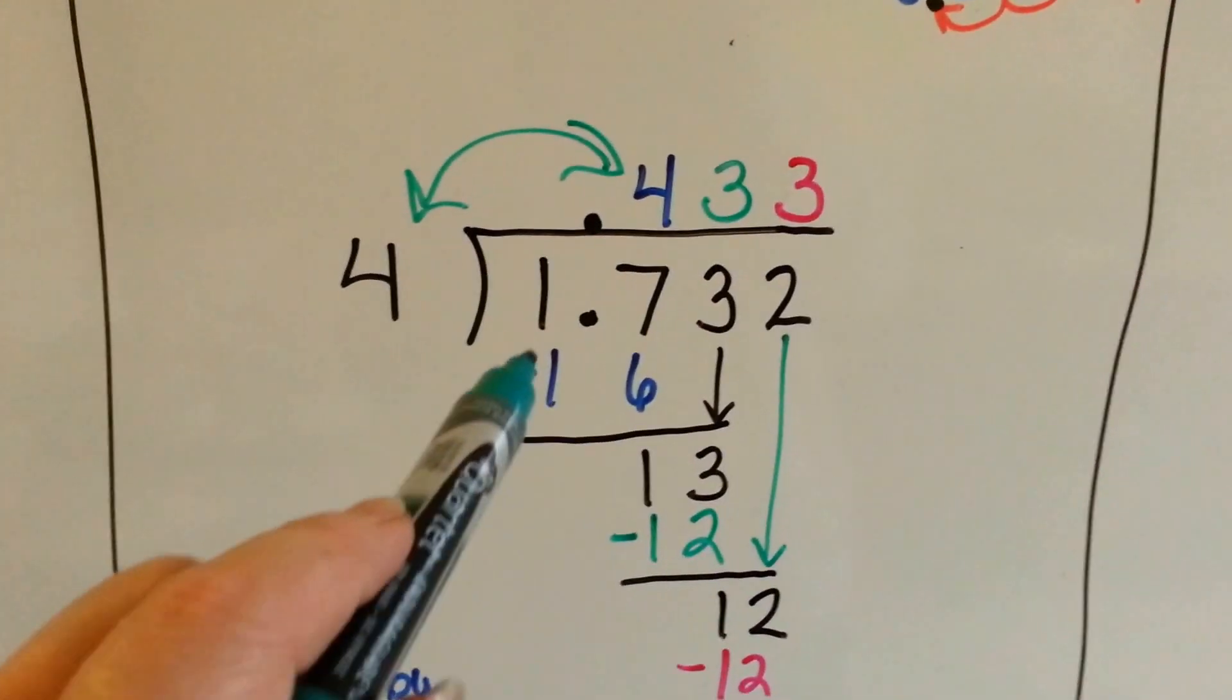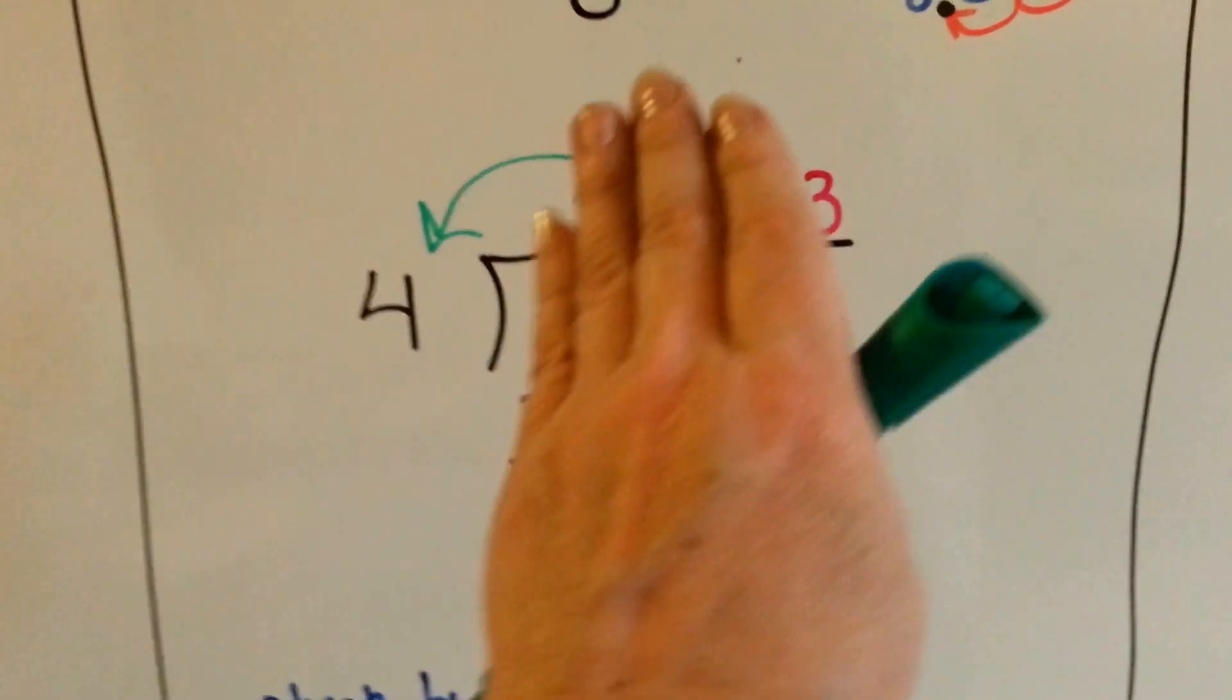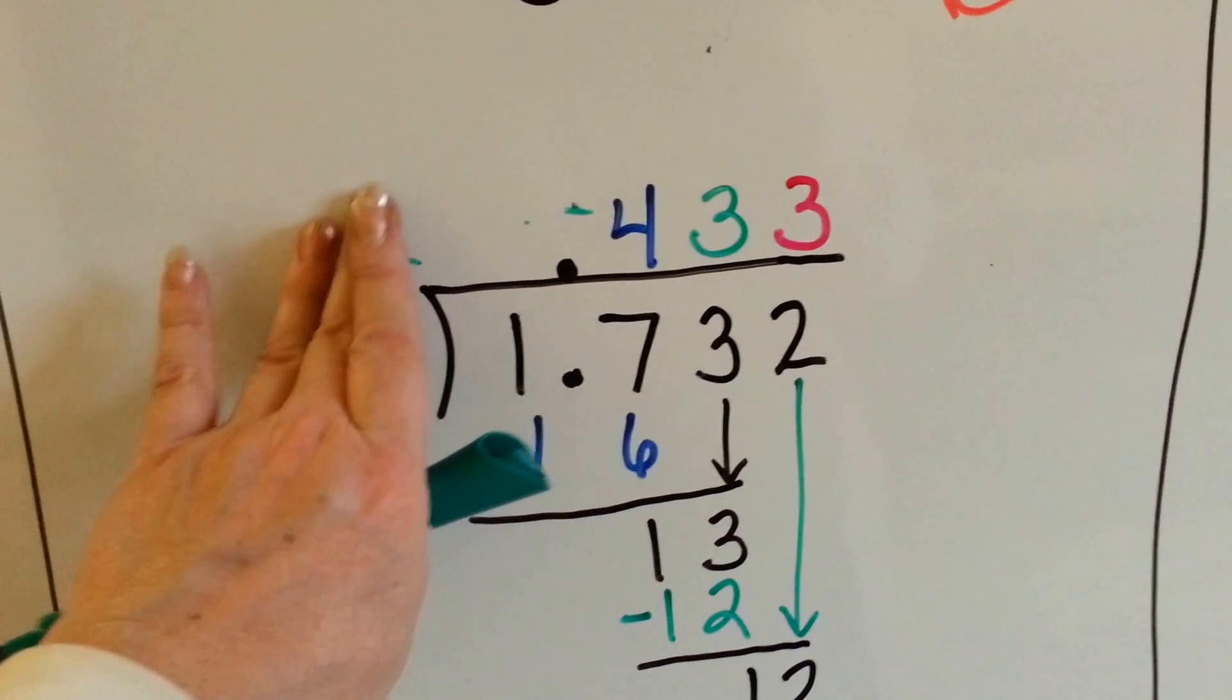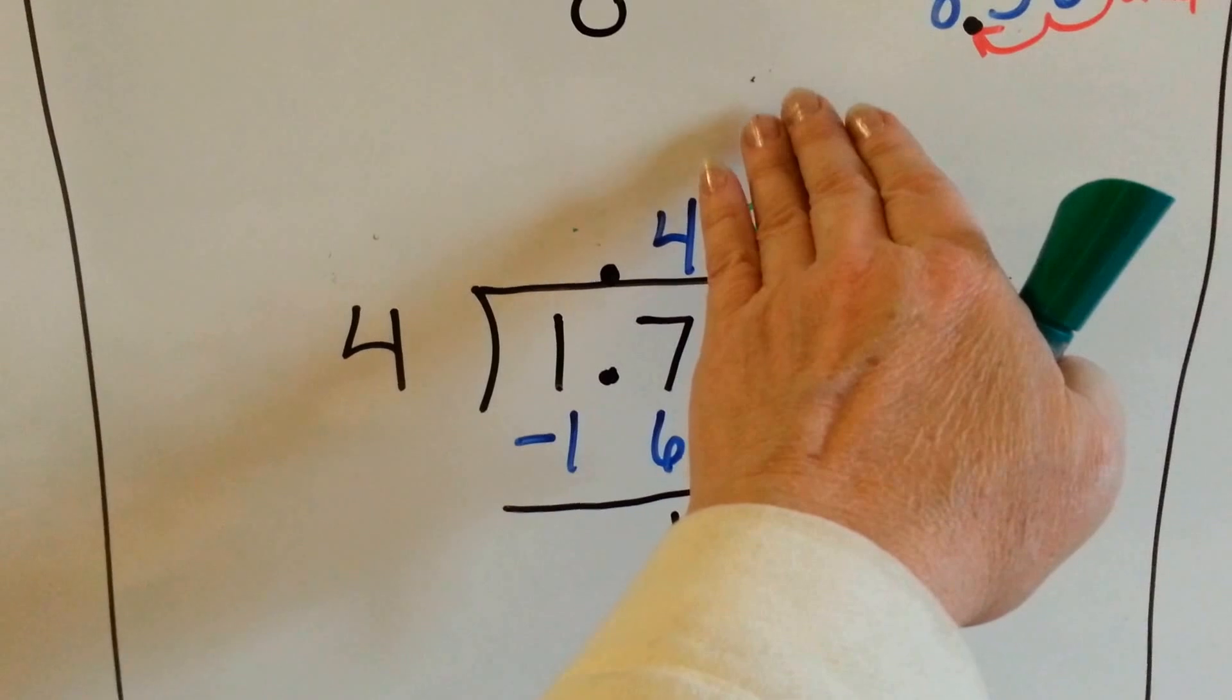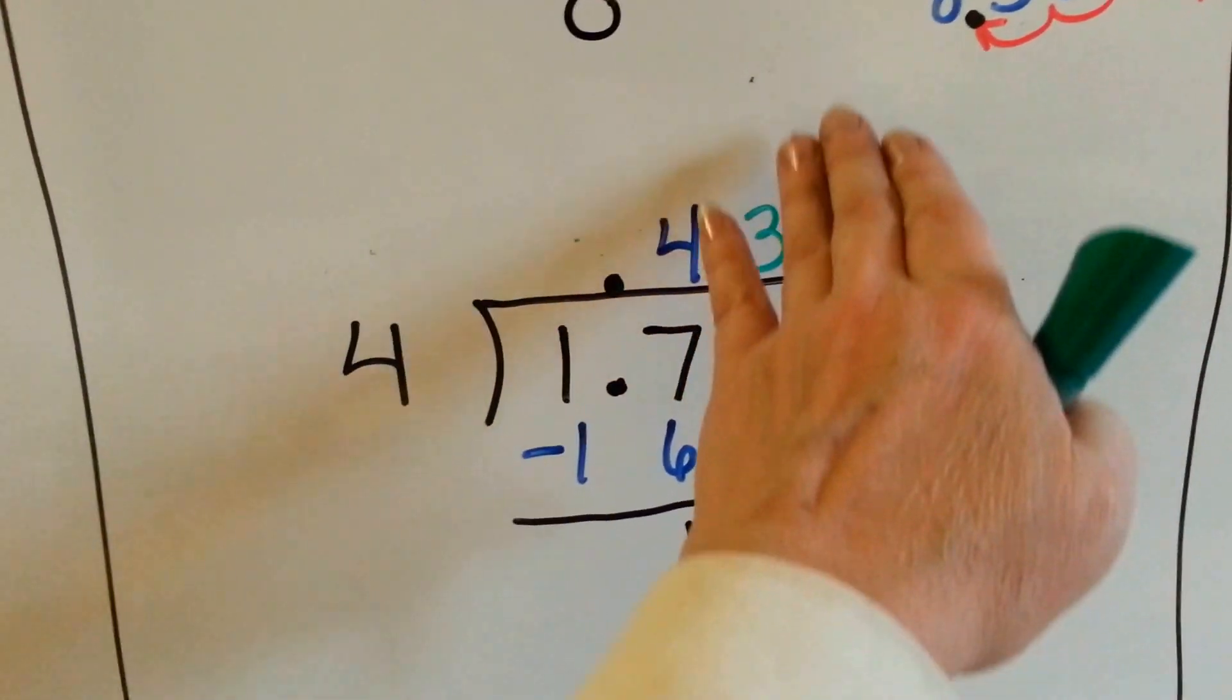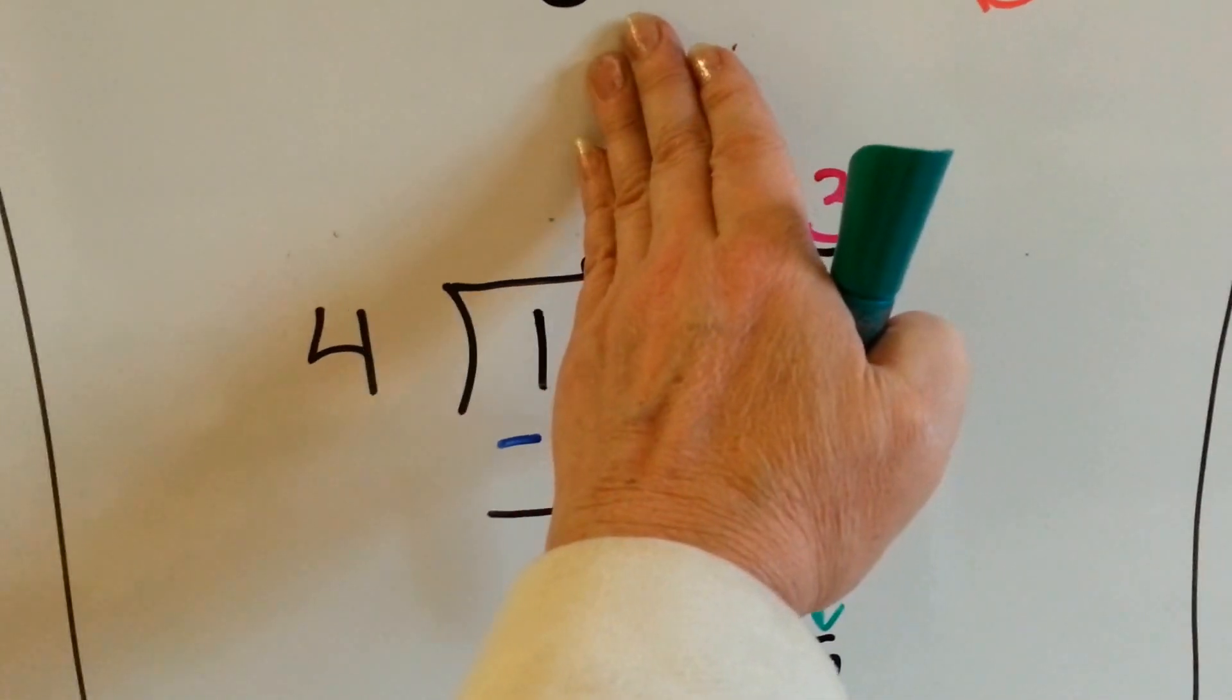For this one, we're doing 1.732 divided by 4. So we ask if 4 can fit into 1. Well, no, it can't. It doesn't fit into 1, it's too little. So, we've got our decimal point straight up. Can 4 fit into 17? Yeah, because 4 times 4 is 16. So that's why the 4 is going above the 7, because we're fitting it into the 17, not the 1.